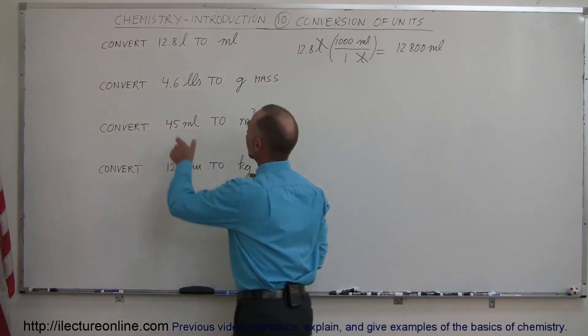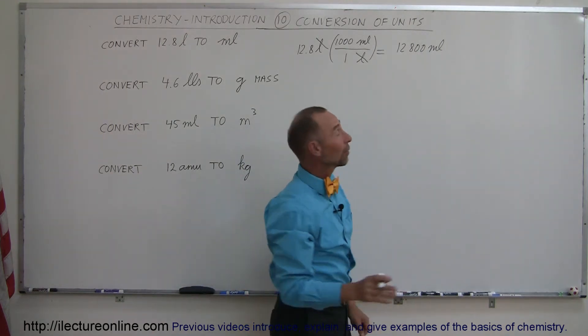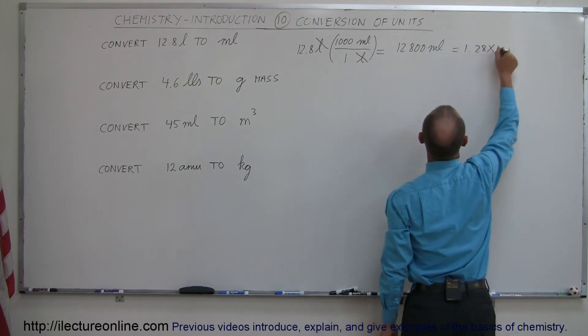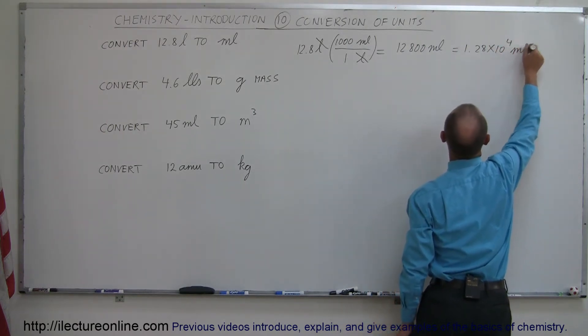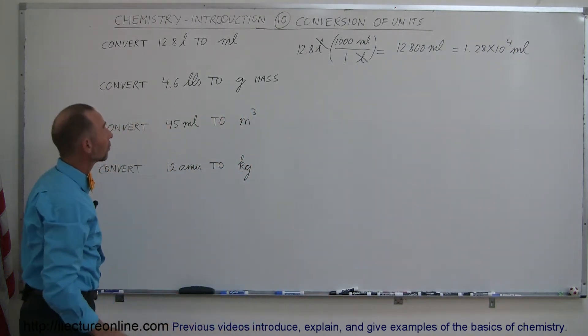Since we started out with three significant figures, we should not have more than three significant figures here, so the proper way of writing that would be 1.28 times 10 to the fourth milliliters. And that's how we convert from liters to milliliters.